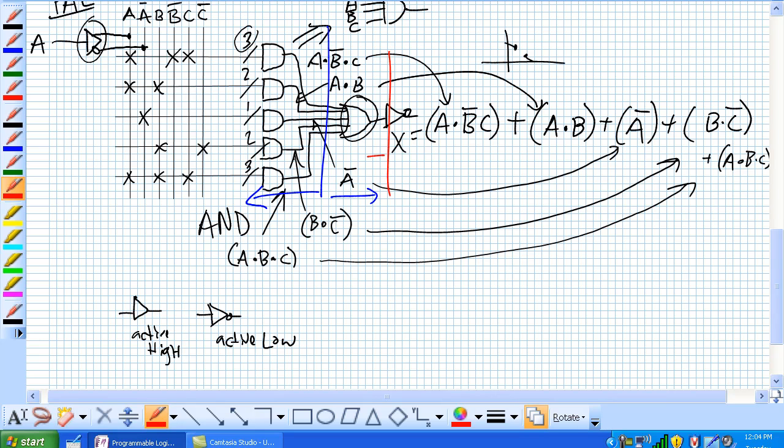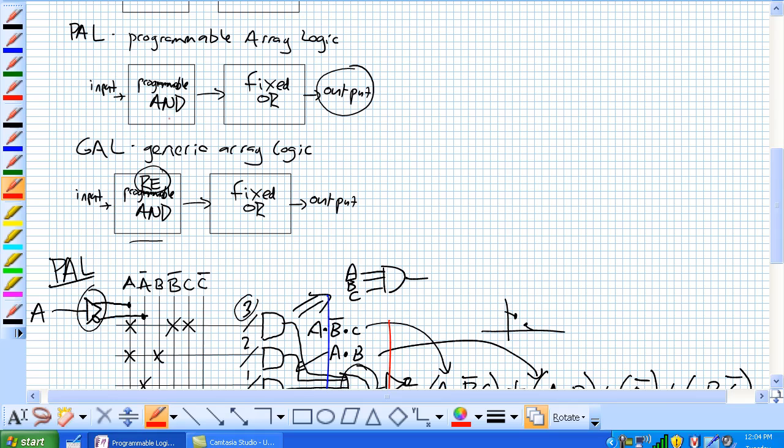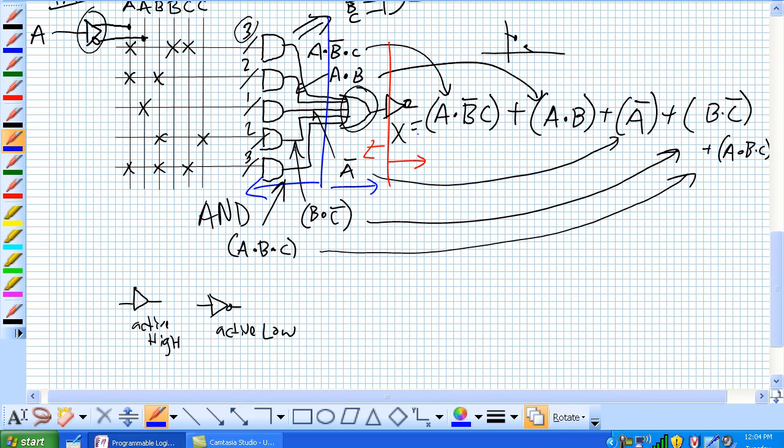And now this red line here, that's the OR and this is the output logic. Because if you remember right, our block diagram, we've got our programmable AND, our fixed OR, and our output logic. So, red line, blue line, right there.